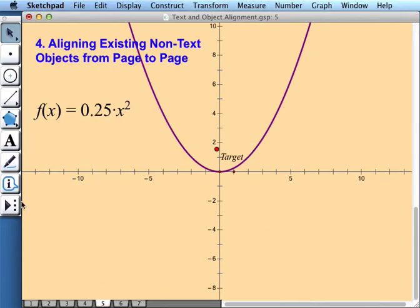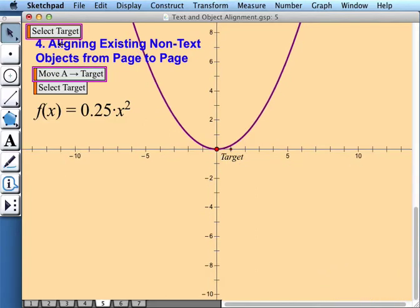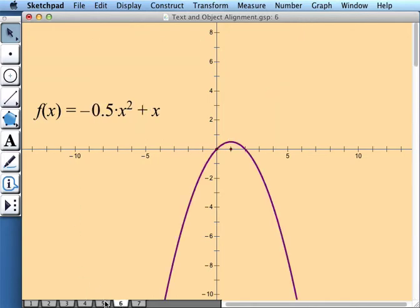Go to page five, use the same tool, click the origin, back to the arrow tool, move, select the target and delete it, and now my graphs are perfectly aligned.